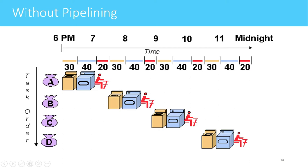There is a possibility of reducing this time by implementing pipelining. When customer A's clothes are washed, they are sent to the dryer — at that point the washing machine is empty, so customer B's clothes can be washed. Once customer A's clothes are dried, the laundry man can start ironing them, while customer B's already-washed clothes are placed in the dryer, and at the same time customer C's clothes can go into the washing machine.